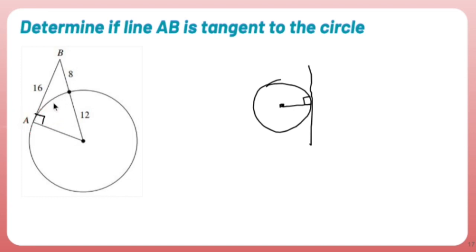which means in order for this to be a tangent line, I have to show that this triangle is a right triangle.